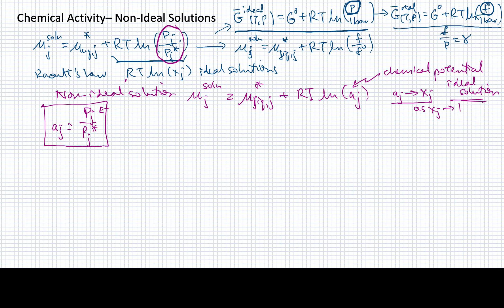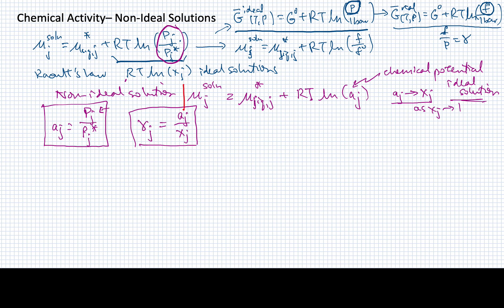With this definition for chemical activity, we're also going to define an activity coefficient. I apologize that we're using the same Greek letter gamma to denote this coefficient, but it will be written as the ratio of the activity over the mole fraction — this is what will help us track the activity as it changes. The expression for the chemical potential is going to be our working definition for a non-ideal solution.